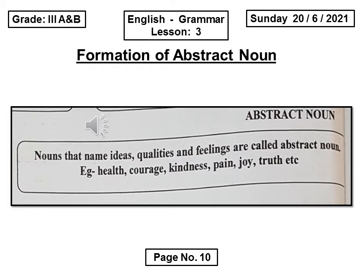Today, inshallah, we are going to focus on abstract nouns. What is an abstract noun? Who can define? Nouns that name ideas, qualities, and feelings are called abstract nouns. For example: help, courage, kindness, pain, joy, truth.